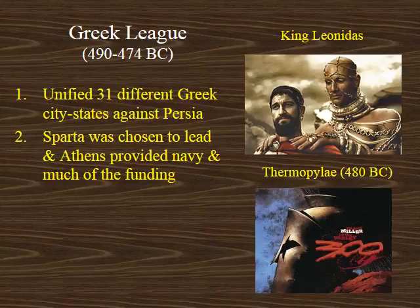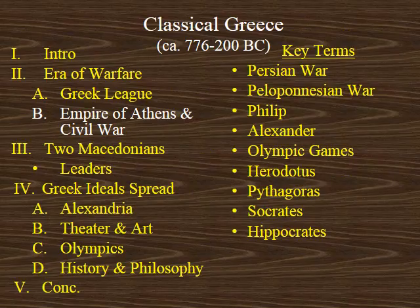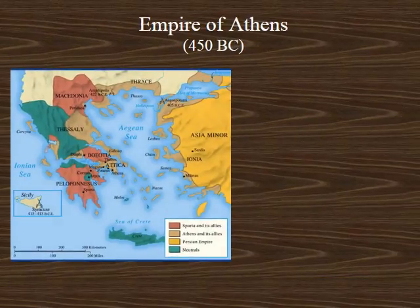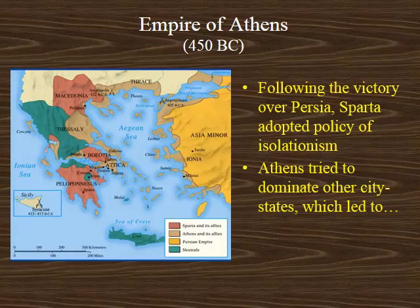Eventually, as a result of their cooperation, the Persian Empire was defeated and the Greeks were victorious in what were called the Persian Wars. Even after the defeat of Persia, the Spartans retreated to their traditional policy of isolationism. Then the Athenians tried to establish their own empire and dominate other Greek city-states. This led to an additional conflict called the Peloponnesian Wars.